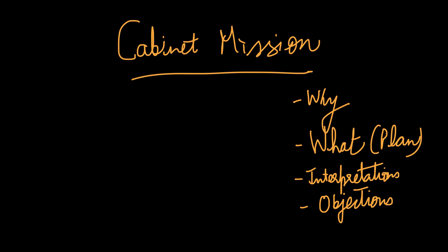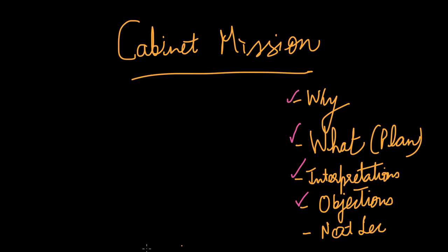Hi everyone, this is Gary from Fantastic Point Hours. Today in this lecture we are going to study in detail about the Cabinet Mission. The broader structure of the lecture will include: why did the Cabinet Mission come to India, what was the plan it brought, the various interpretations given to it by the Muslim League, Congress, and the British, and finally what were the objections to the Cabinet Mission. The last thing I'll discuss is what happens after the Cabinet Mission, which will be the next lecture.